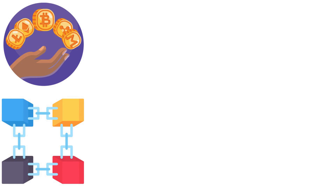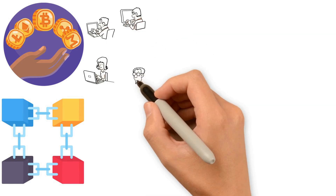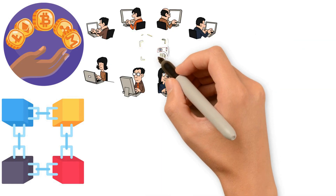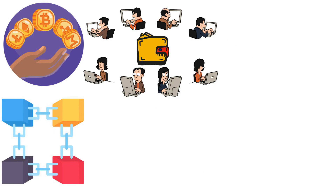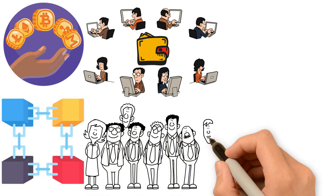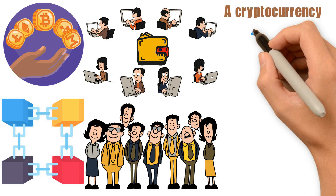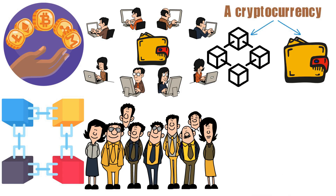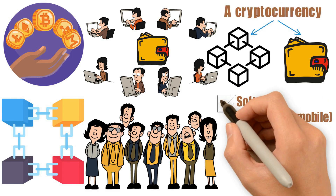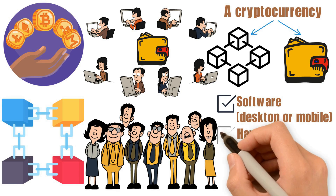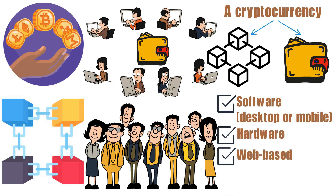Today there are hundreds of cryptocurrencies with new ones being created every day. Every cryptocurrency has its own blockchain. These blockchains are distributed online where they are stored on the digital wallets of every investor that holds coins or tokens in that specific cryptocurrency.